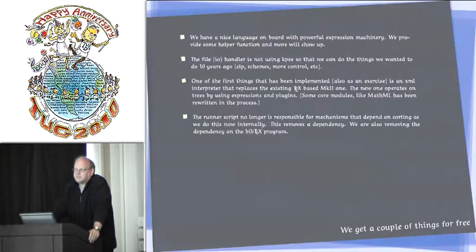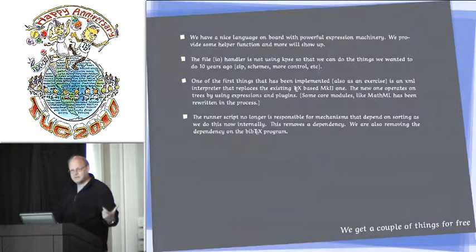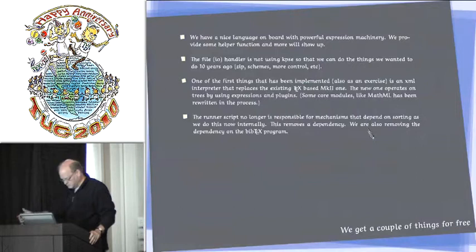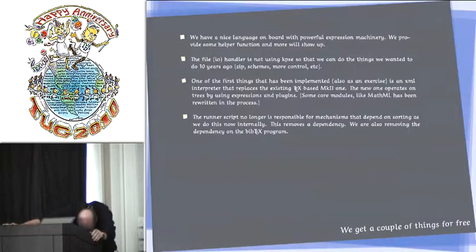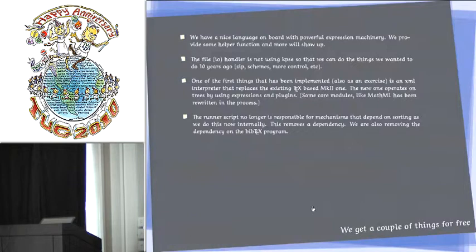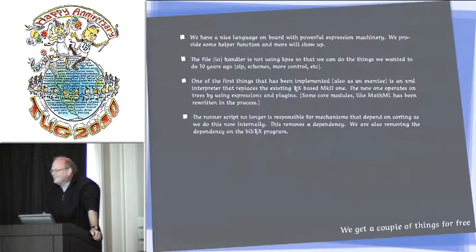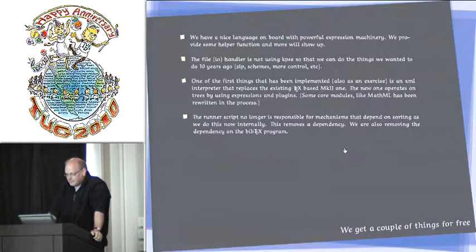ConTeXt, processing ConTeXt was always done with a runner script. You have something called texexec that processed your file. It would take care of multiple runs if needed. That's no longer done with texexec, a Ruby script. It's context, the context script, which is actually a Lua script, which runs on top of the LuaTeX engine. So, basically, LuaTeX. I think BibTeX was the only external program that was used by bibliography module, but we don't actually need it anymore.